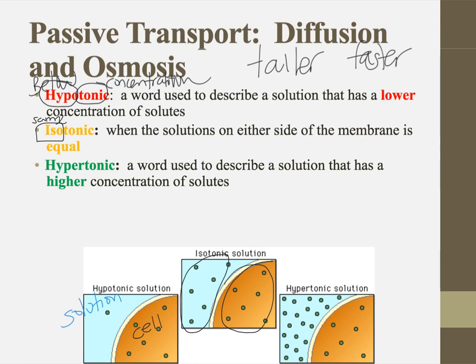A hypertonic solution is a little different. Hyper means above, so the concentration is higher. In a hypertonic solution, the concentration of solutes is higher in the solution than it is in the cell. We can use these words and pictures to predict the movement of molecules.